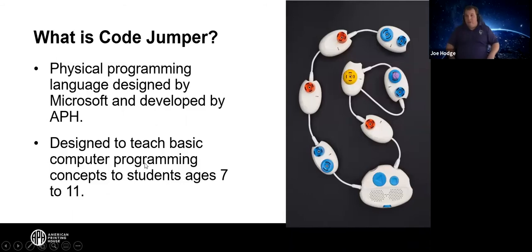What is Code Jumper? Code Jumper is a physical programming language designed by Microsoft and then developed by APH. It's designed to teach basic computer coding concepts to students ages 7 to 11. That's the recommended age range, but what we've found is it kind of works with anyone — coding clubs, et cetera.